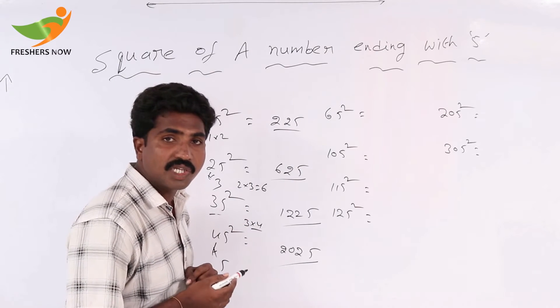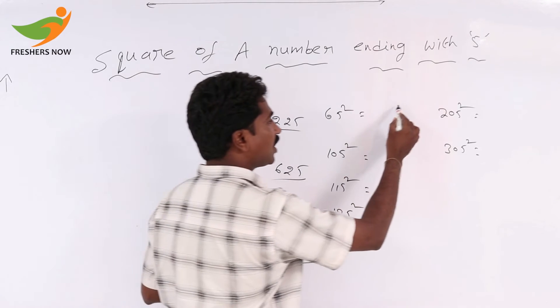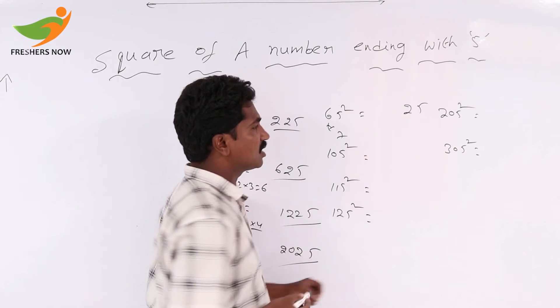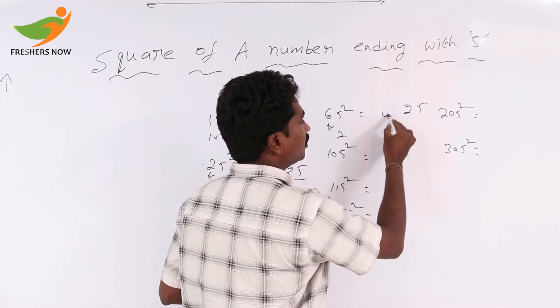For 65 square: 5 square equals 25. The tens digit is 6. The next number after 6 is 7, so 6 into 7 equals 42. So 65 squared equals 4225.